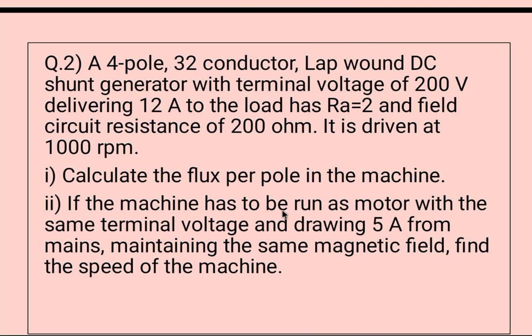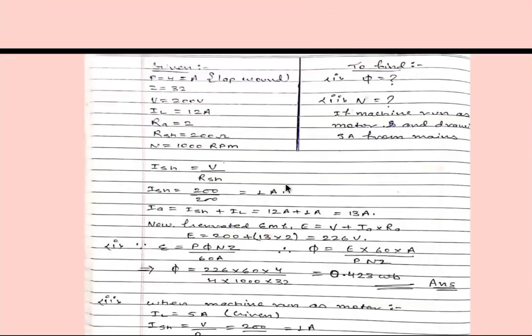Calculate the flux per pole in the machine. And the second part of the question is: if the machine has to be run as motor with the same terminal voltage and drawing 5 ampere from mains maintaining the same magnetic field, find the speed of the machine.